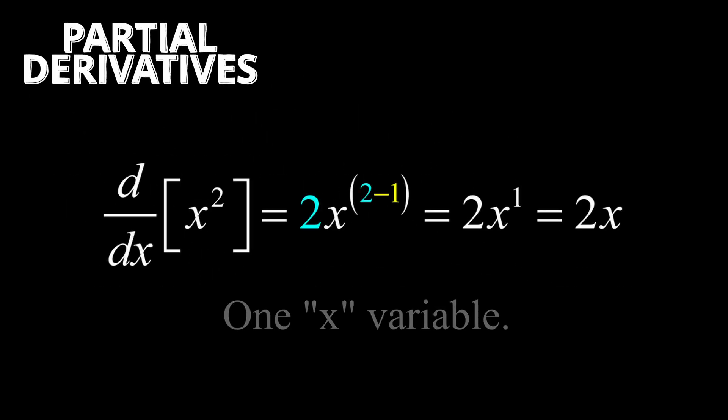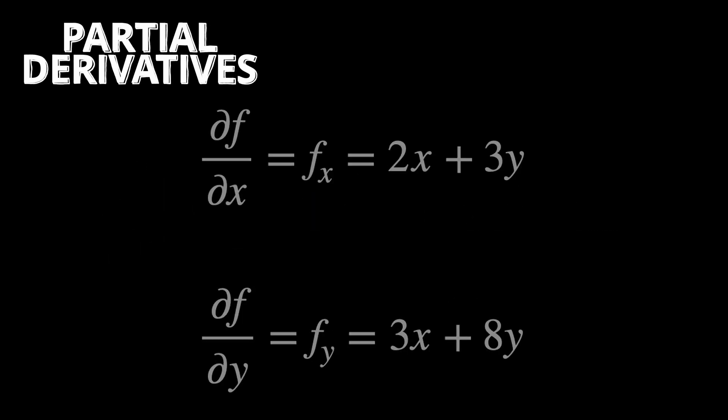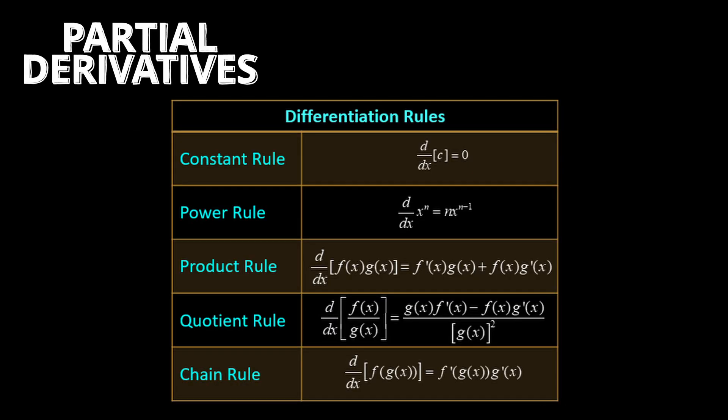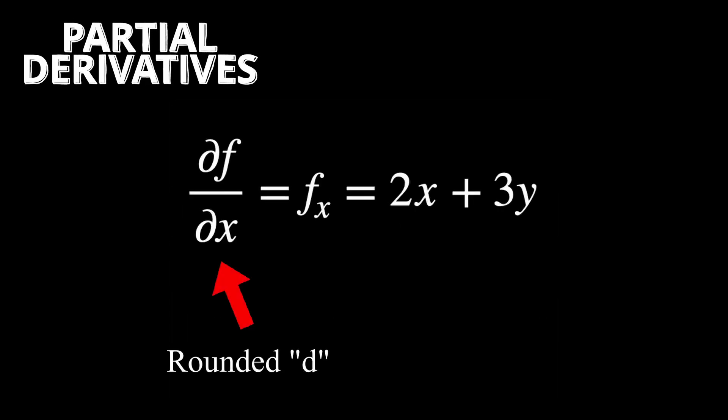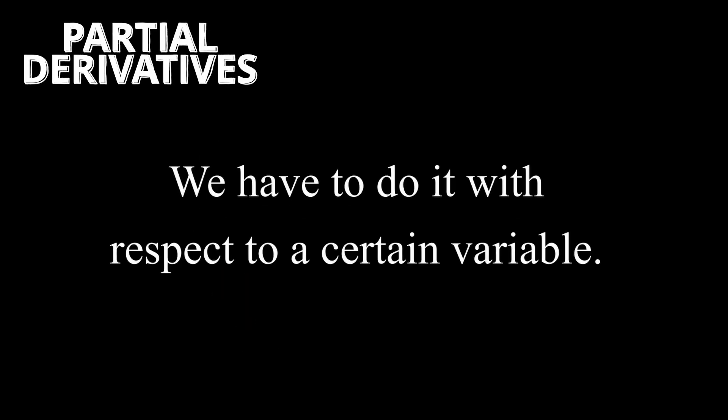Partial derivatives. Normally, when we take derivatives, there's only one variable in our function. We have to use partial derivatives to differentiate multivariable functions. This way, we can still apply the differentiation rules we learned before. They're denoted like this, with a rounded D. This method is done by differentiating the function with respect to one variable while holding the other's constant.